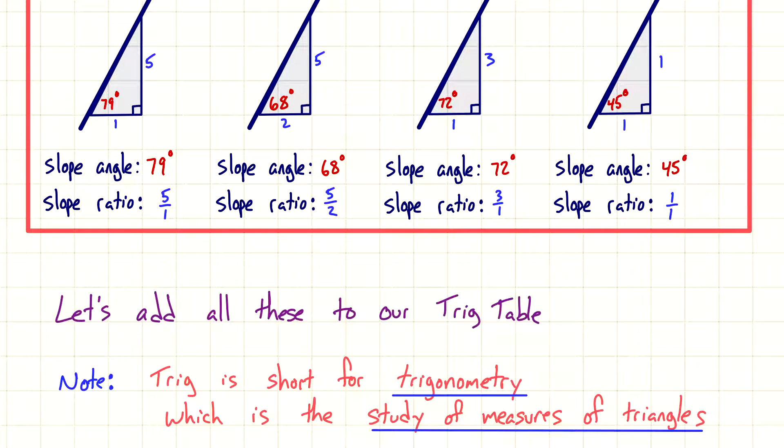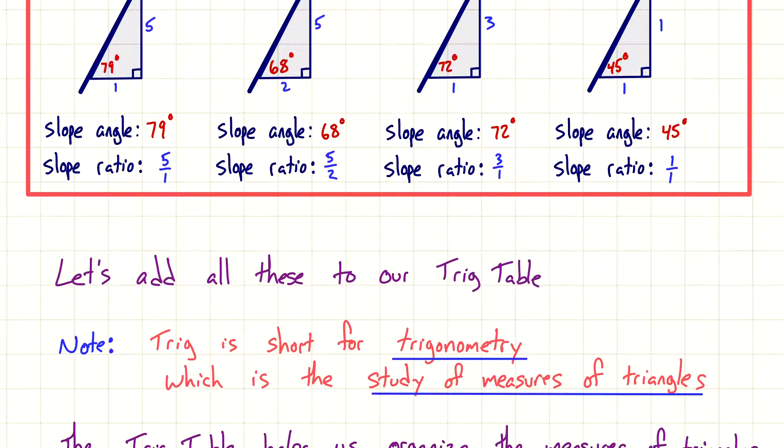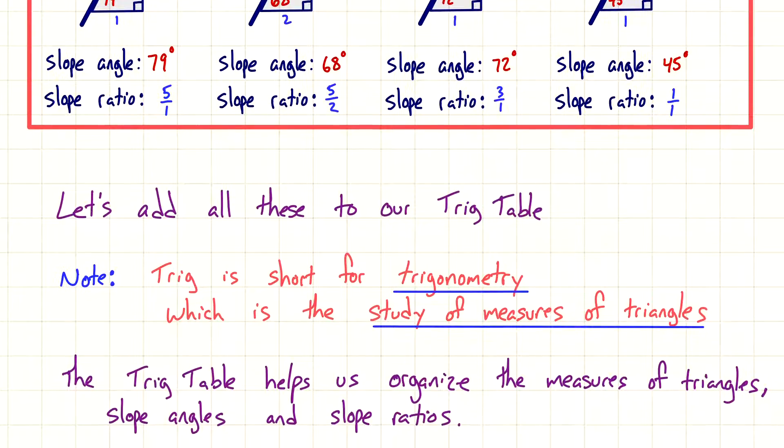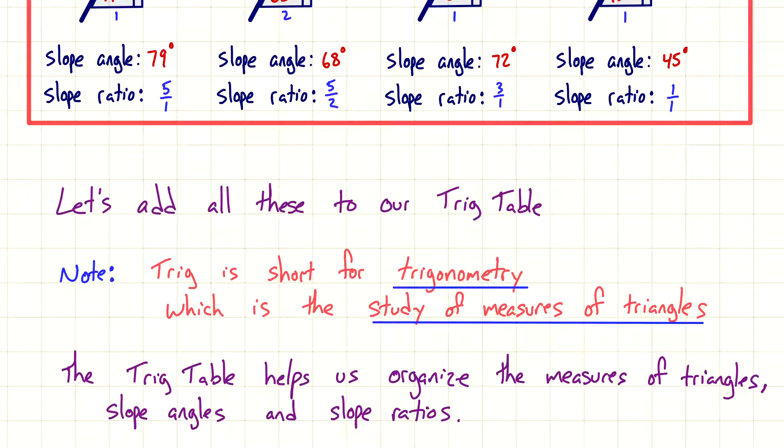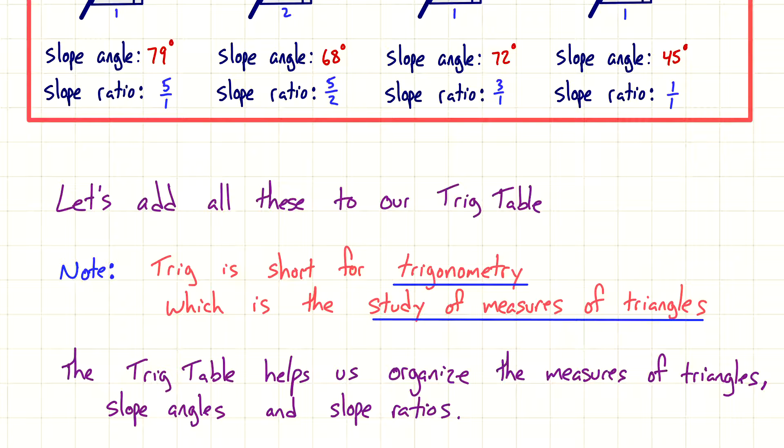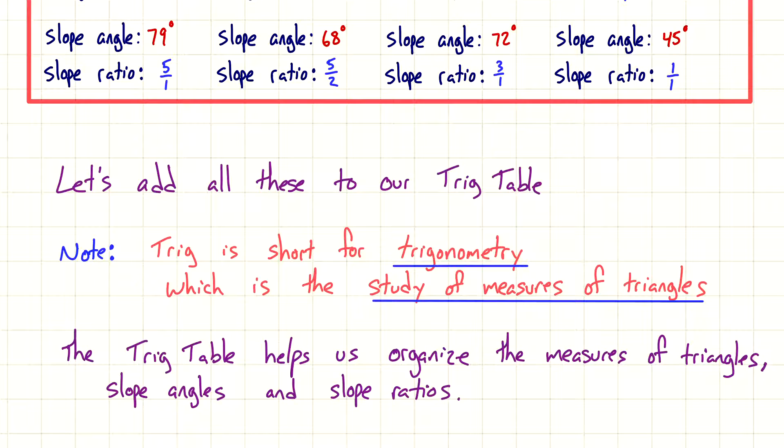That was the organization chart that we started last time. In case you need an explanation of why it's called trig table, this term trig is short for trigonometry. Trigonometry is the study of the measures of triangles. A trig table helps us organize that information, the measurements of the triangles. Specifically, slope angles and slope ratios.